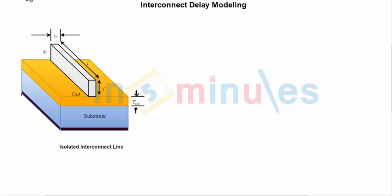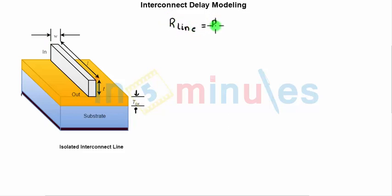Let's start with a simple isolated interconnect line. Here is my interconnect — this is my input and this is my output. The dimensions of the interconnect line are shown with length L, width W, and thickness T. TOX is the thickness of the oxide. The line resistance of this interconnect from input to output is R_line, which is given by sheet resistance R_S of the interconnect multiplied by L divided by W.